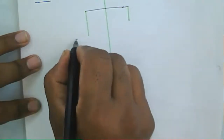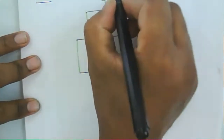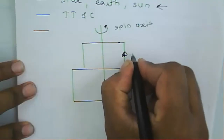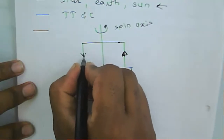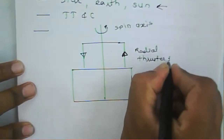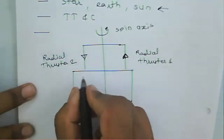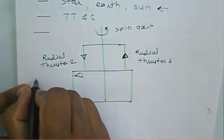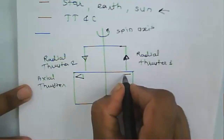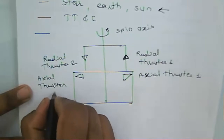The thruster model includes a spin axis, radial thrusters (one pointing upward and one pointing downward), and axial thrusters in two directions — axial thruster one and axial thruster two.